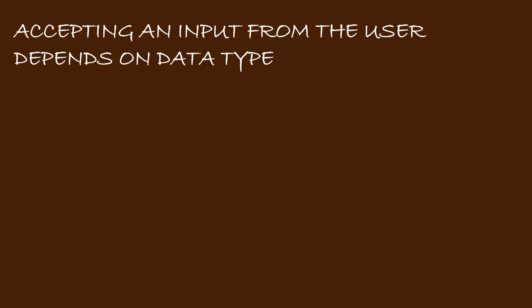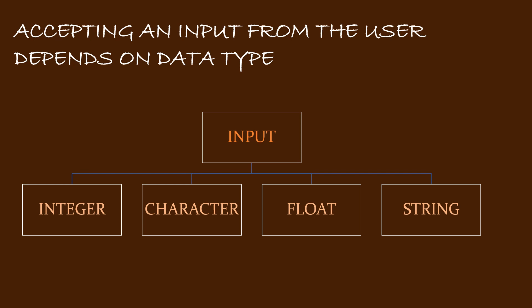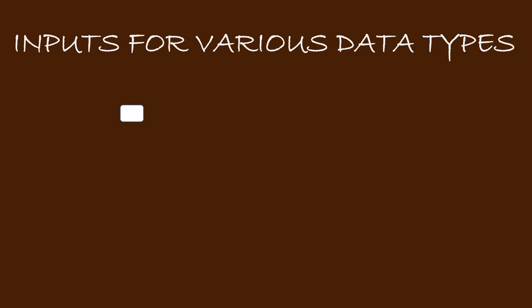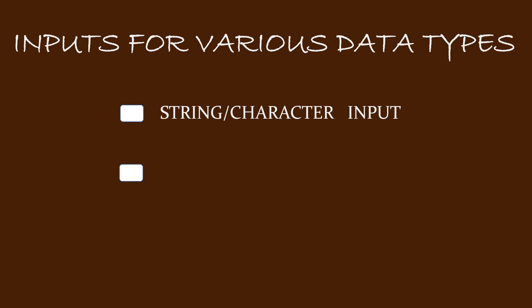The computer accepts input from the user depending on their data types. For now, just remember that inputs could be of four data types: integer input, character input, float input, and string input. Any information in a computer is called data and types of data are called data types. We'll discuss how to take inputs for various data types — string or character input, integer input, and floating point input.